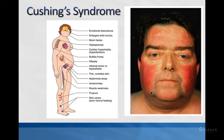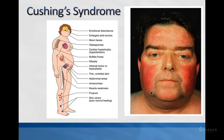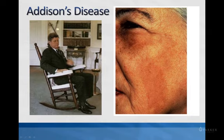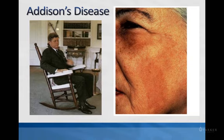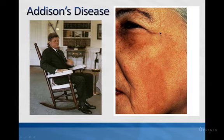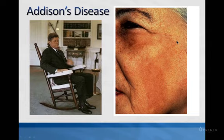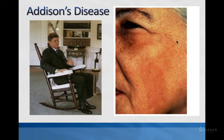President John F. Kennedy was thought to have Addison's disease — he always had a constant bronze color, was constantly tanned. Shown here is an individual with Addison's disease displaying the bronzing of the skin. With Addison's disease, ACTH levels are elevated, which causes the hyperpigmentation — the same mechanism discussed with Cushing's disease.